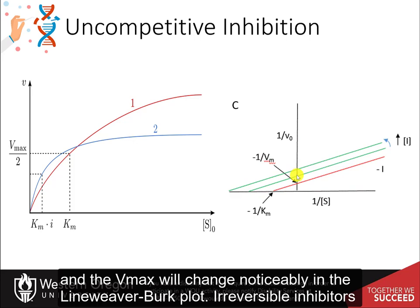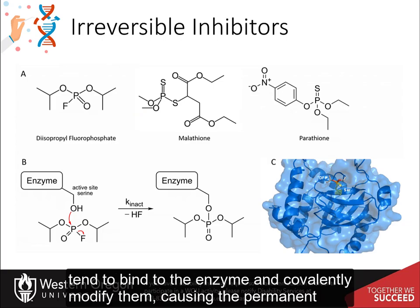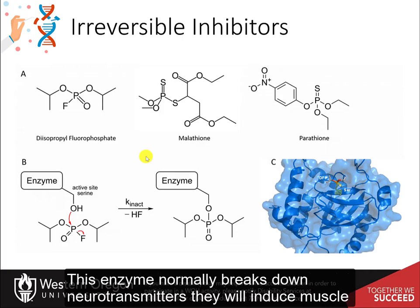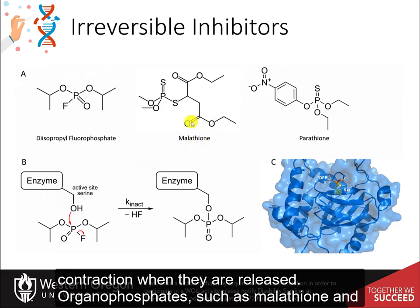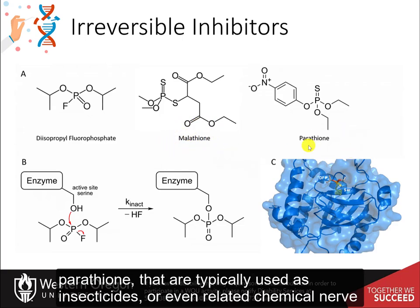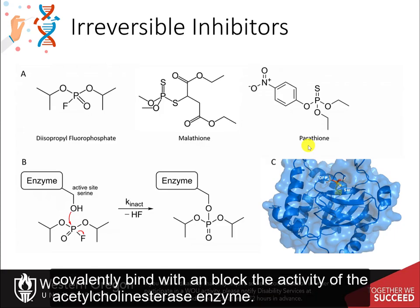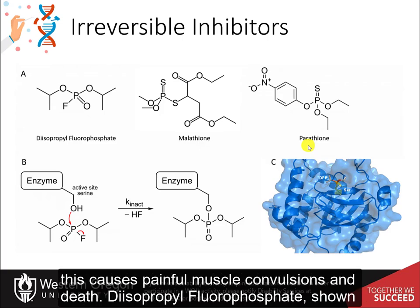Irreversible inhibitors tend to bind to the enzyme and covalently modify them, causing the permanent inactivation of the enzyme. An example of this is with the acetylcholinesterase enzyme, which normally breaks down neurotransmitters that induce muscle contraction when they are released. Organophosphates such as malathion and parathion, typically used as insecticides or related chemical nerve agents used in war, covalently bind with and block the activity of the acetylcholinesterase enzyme, causing painful muscle convulsions and death.